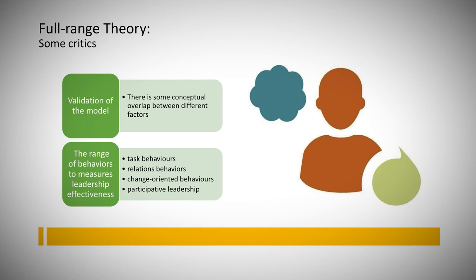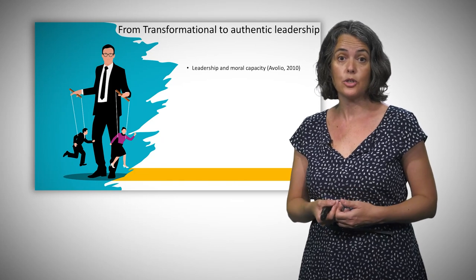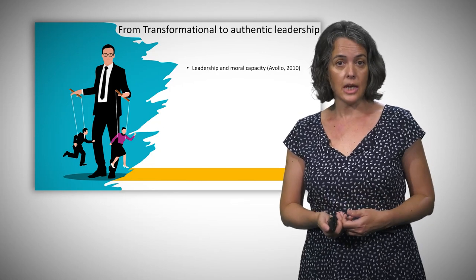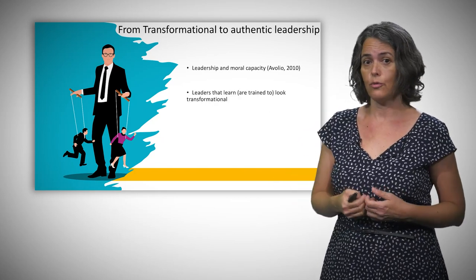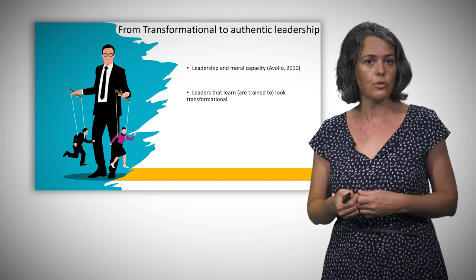Although the theory has received broad empirical support, it is not exempt from criticism. Main critics consider the overlapping between different factors and the need to identify more clearly the behaviors relevant for leaders. Recent studies also underline that the model needs to incorporate other aspects of leadership relevant for understanding effectiveness. Research has shown concerns about the moral dimension, showing the possibility that some leaders are trained to look transformational but without developing a moral basis. Those leaders have been described as pseudo-transformational leaders.